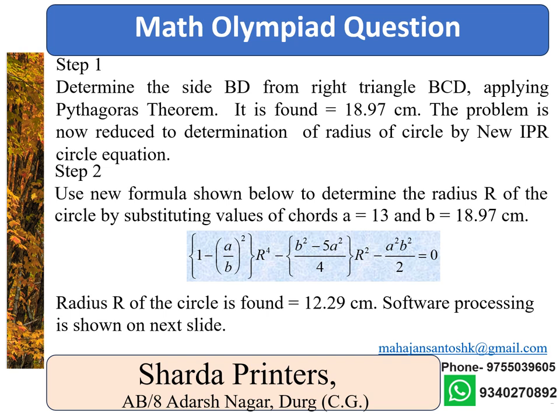BD is found to be equal to 18.97 cm. The problem is now reduced to determination of the radius of the circle by the new IPR circle equation. The formula is shown on the screen.